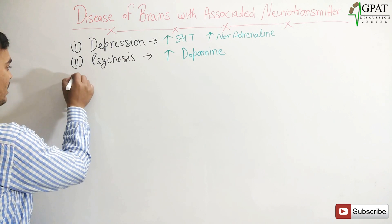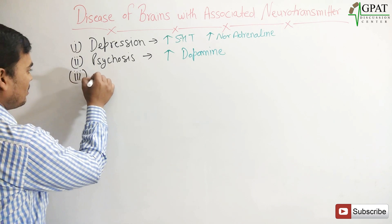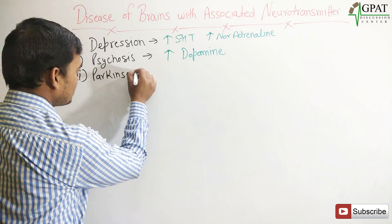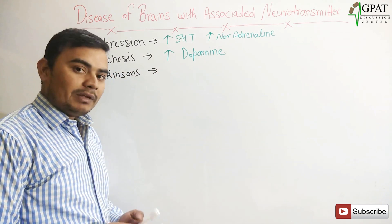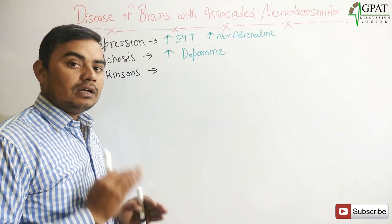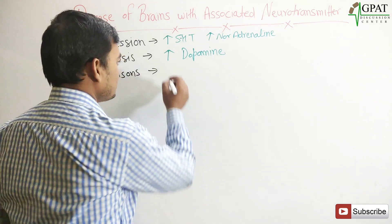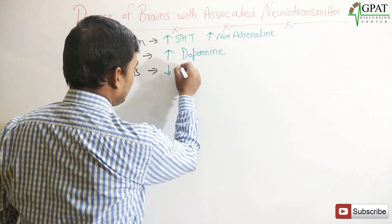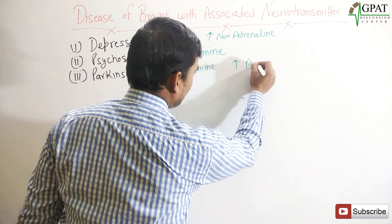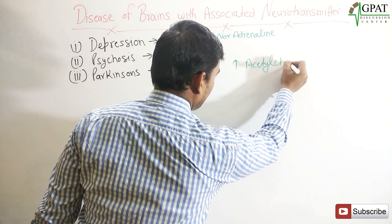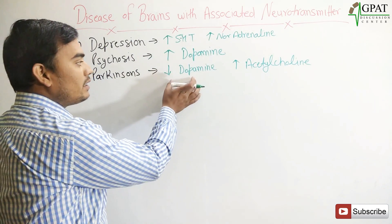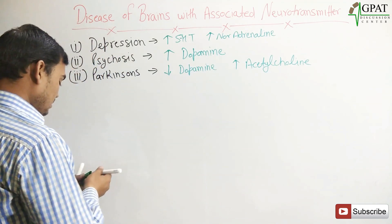Next is Parkinson's — very important. In Parkinson's, your dopamine level decreases and acetylcholine level increases, meaning there is an imbalance between the dopamine and acetylcholine levels. So here: decreased dopamine and increased acetylcholine. The anti-Parkinson drug mainly targets increasing the dopamine level and decreasing the acetylcholine level.